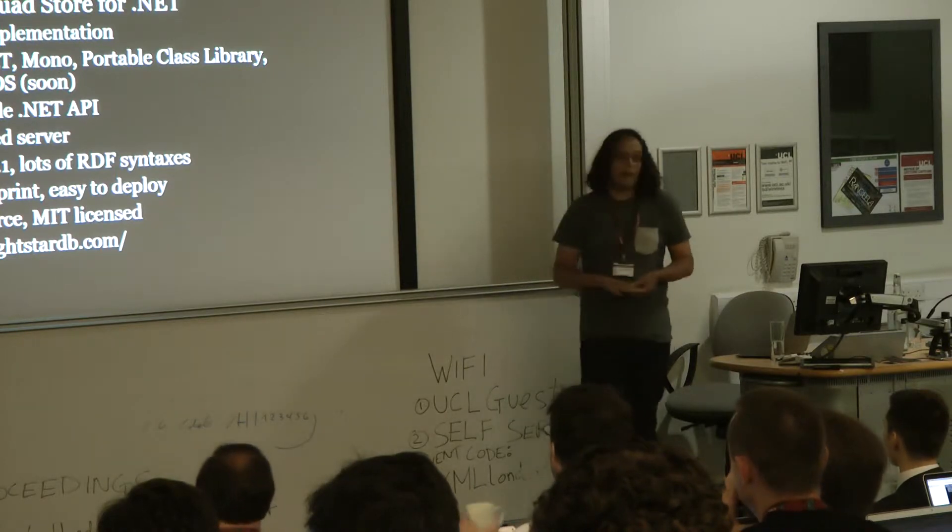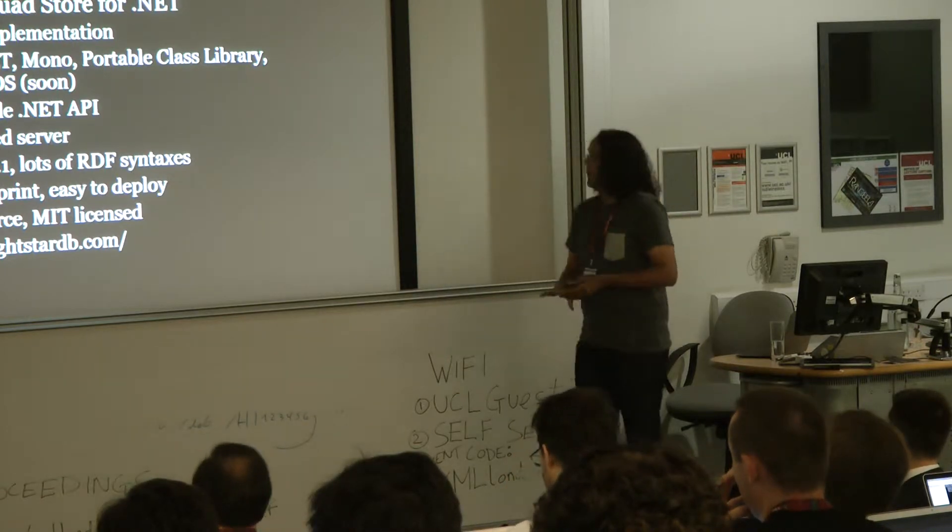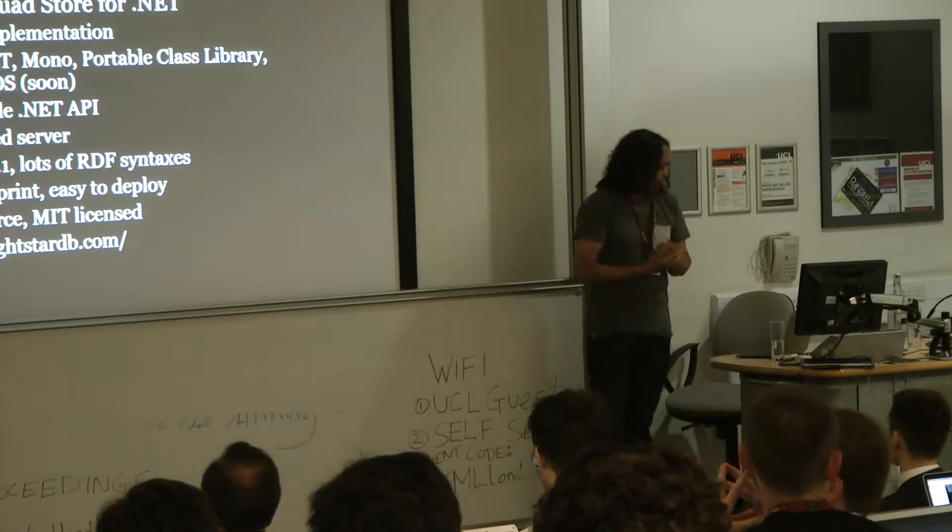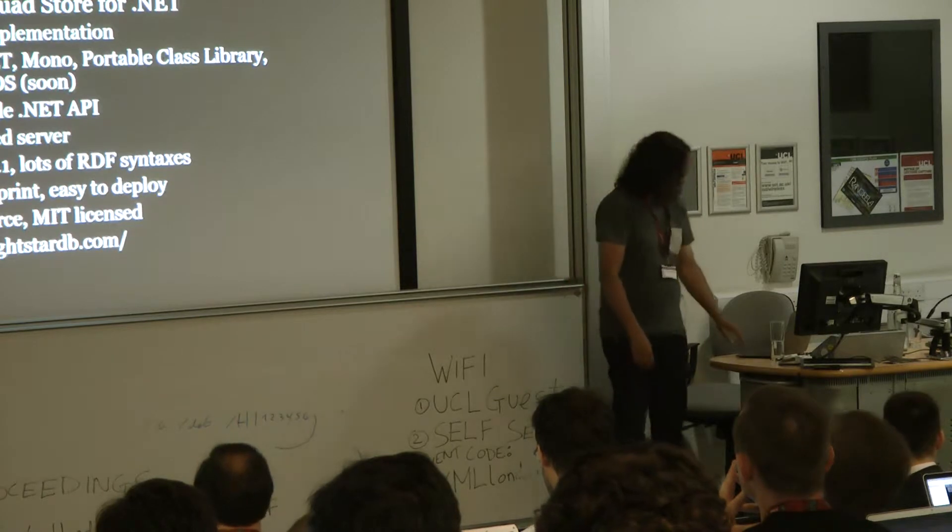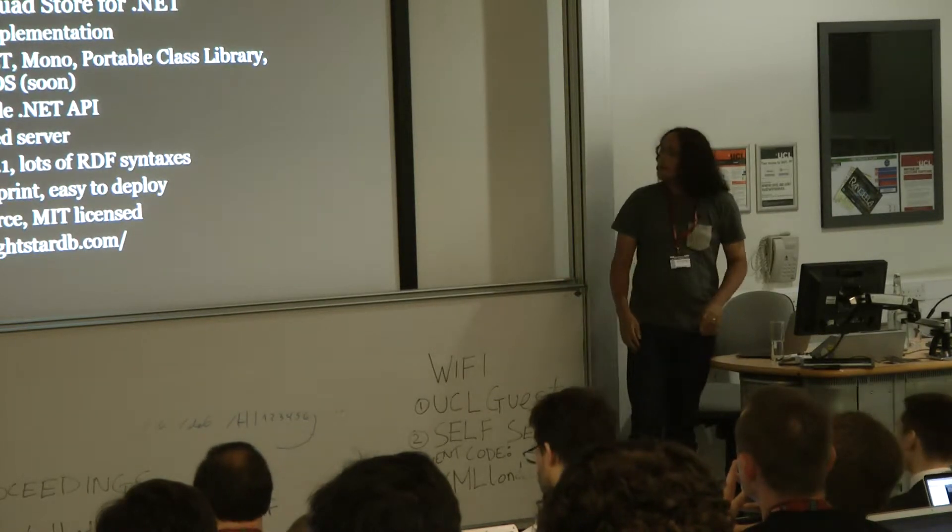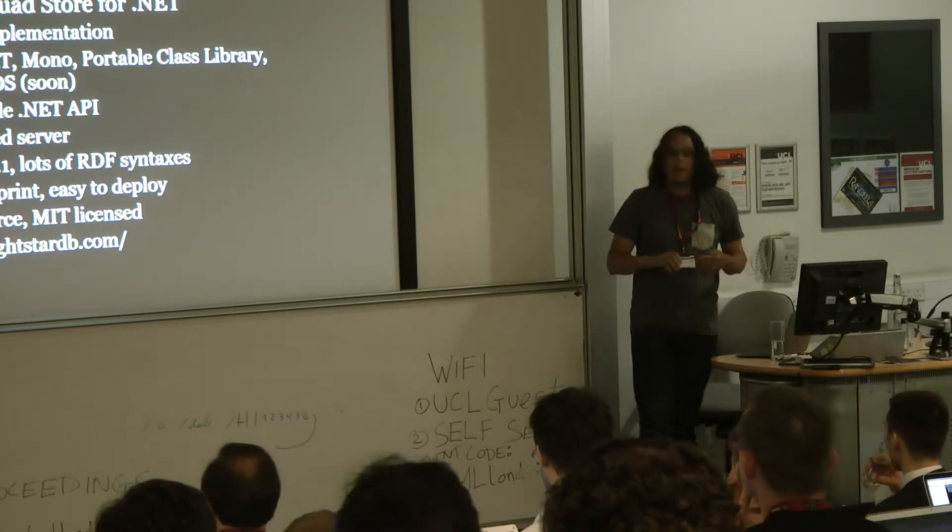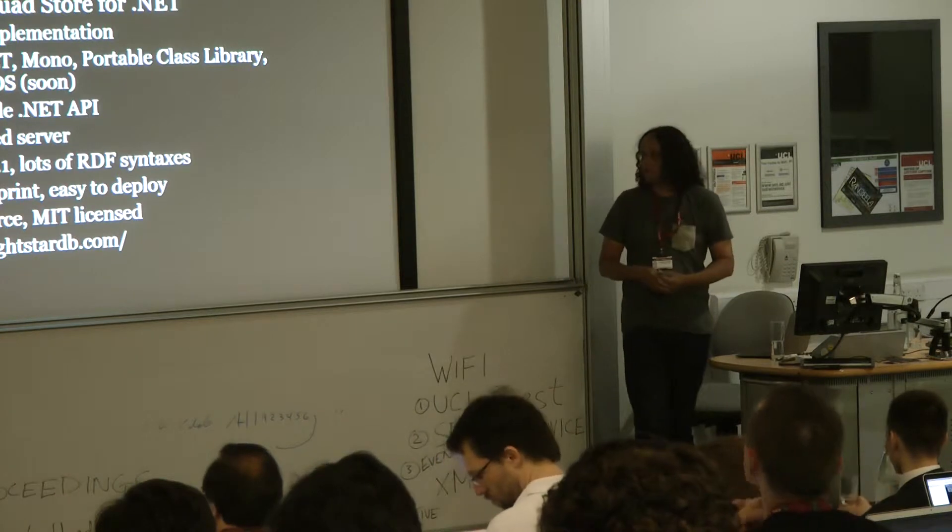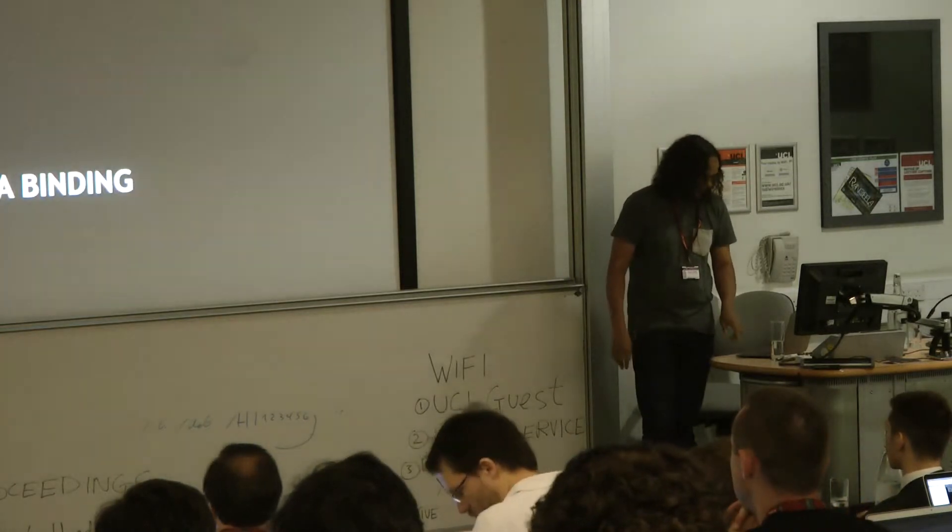Having said that, as well as our embedded API, we do also have a REST-based server using the awesome Nancy framework, which is a cross port of a Ruby framework and works really nicely, much better than ASP.NET. So, we're aiming to basically do RDF, do SPARQL, have a very small footprint, be very easy to deploy, easy to deploy upgrades and so on and so forth. If you want to check it out, there is a website, of course.